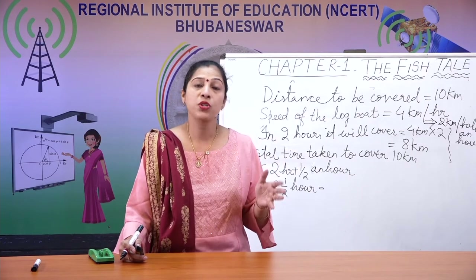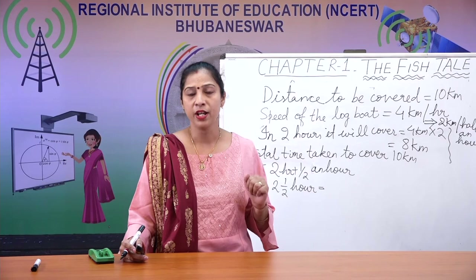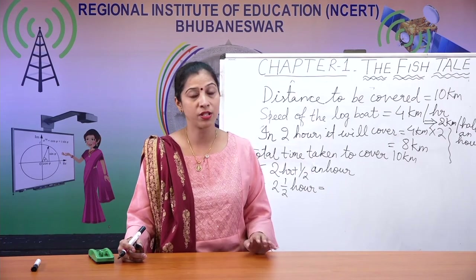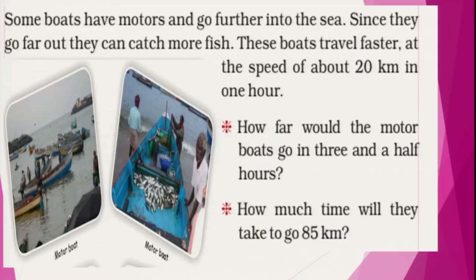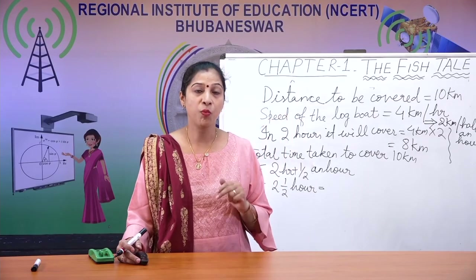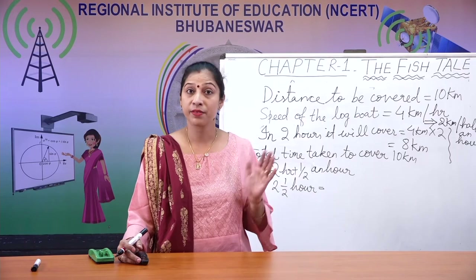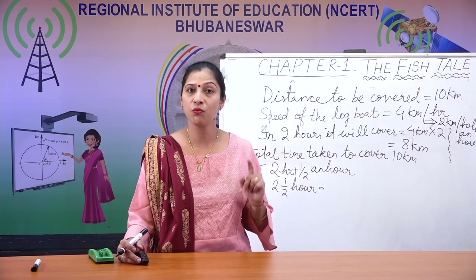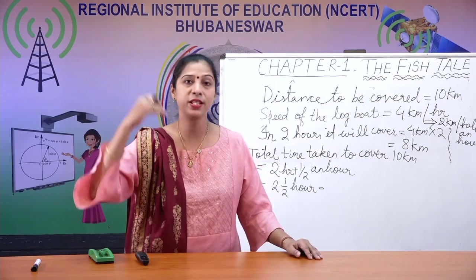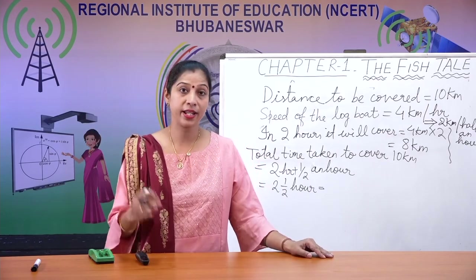There are other boats with motors that go further into the sea. Since they go far out, they can catch more fish. These motor boats travel faster at a speed of about 20 kilometers per hour — compared to the log boat's 4 km per hour, motor boats can go much deeper into the sea.